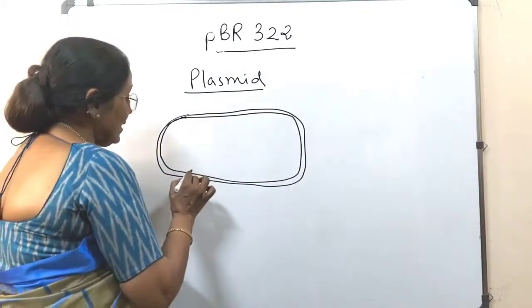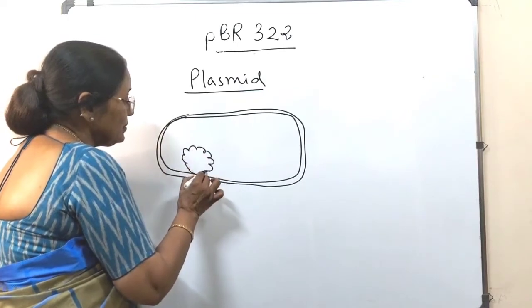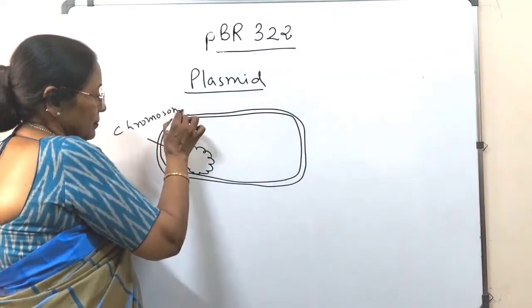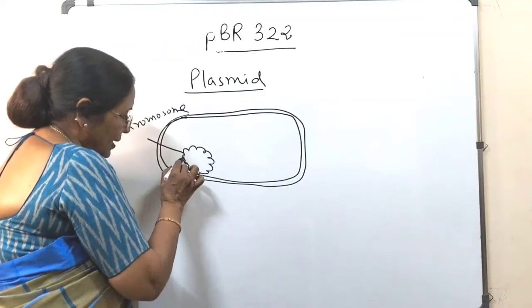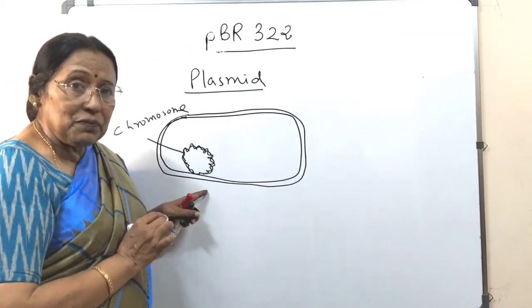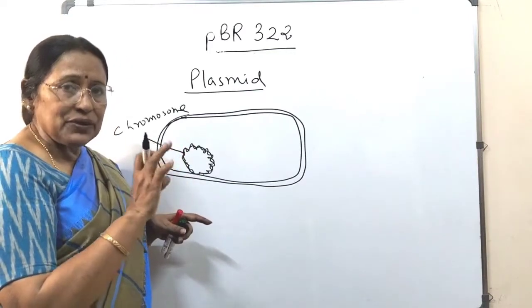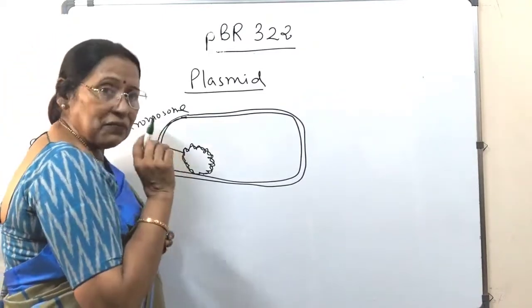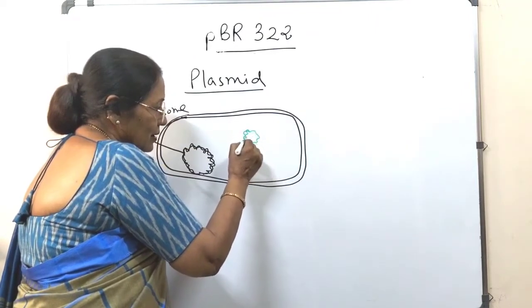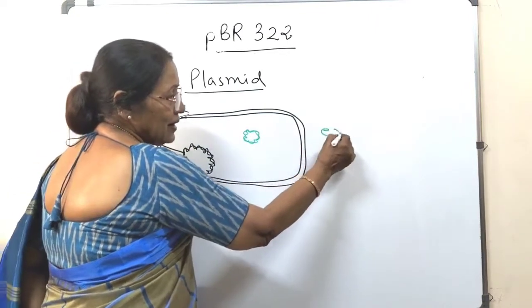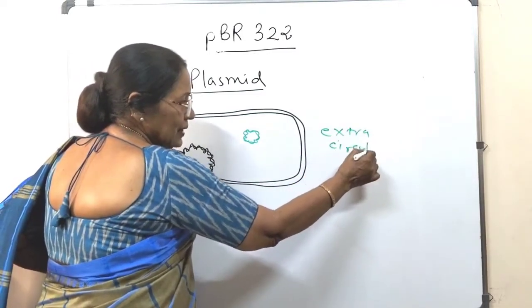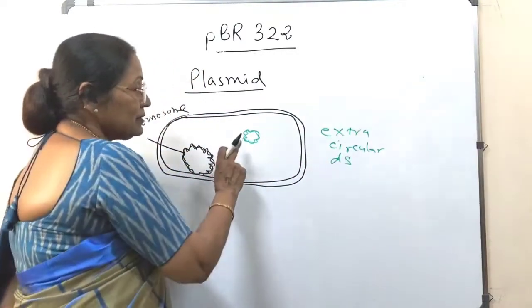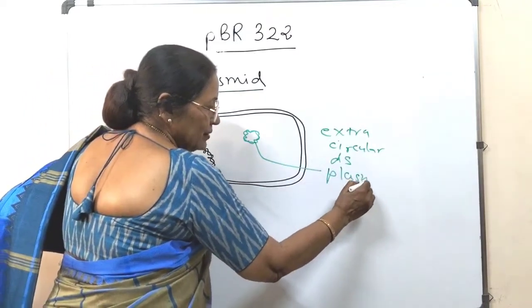A chromosome extra than its own main genetic material. This is its chromosome, which is circular and which is double stranded. This is its main chromosome which is having all important genes, which are necessary for its all life processes. But other than that, some of the bacteria, they may have one extra. So this is extra. This also is circular. And this is double stranded. This plasmid, this is our vector.